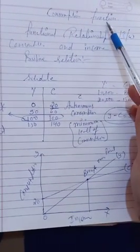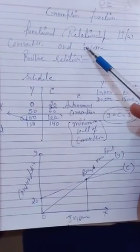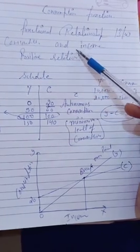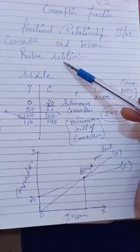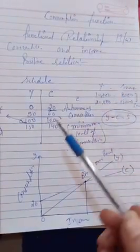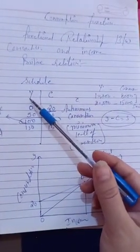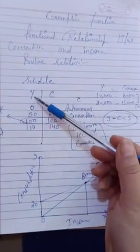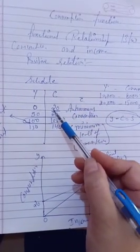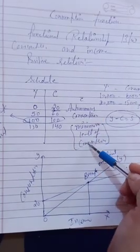To summarize: the consumption function is the functional relationship between consumption and income. There is always a positive relation between them, and there is always a minimum level of consumption in the economy. In the schedule, as income increases, consumption also increases. The value 20 represents autonomous consumption — the minimum level of consumption — denoted as C-bar.